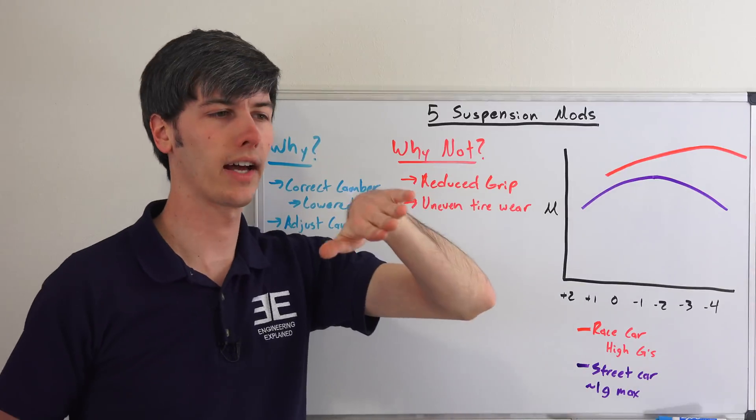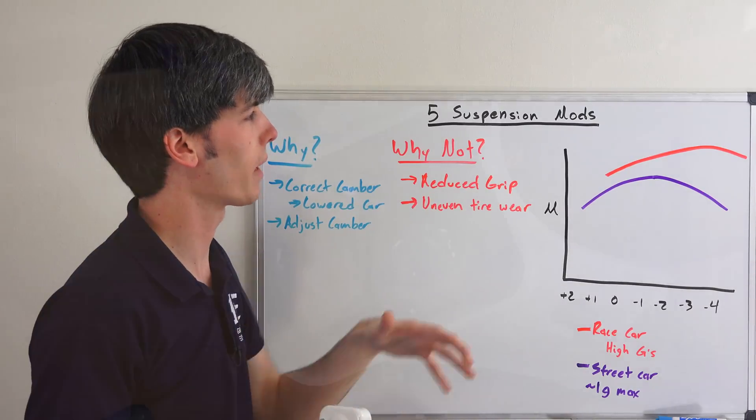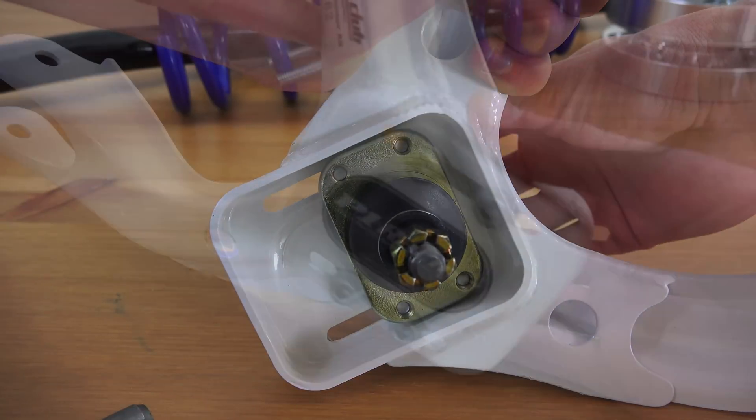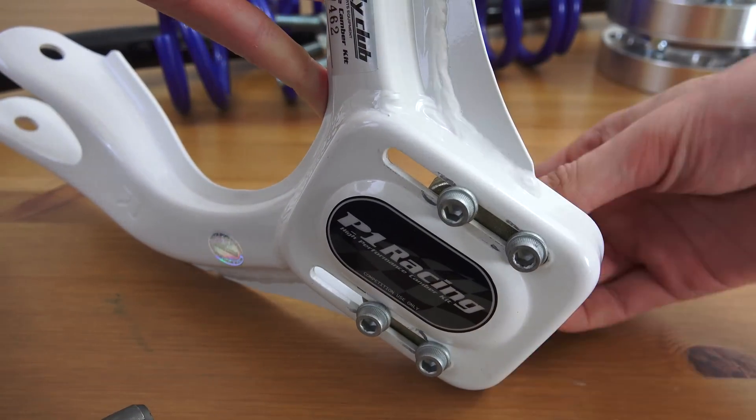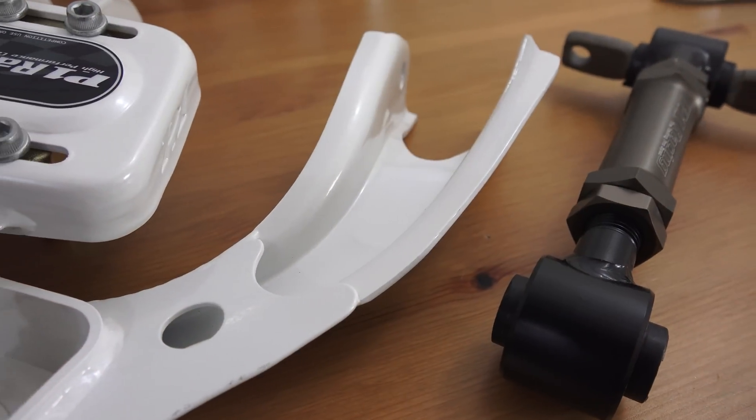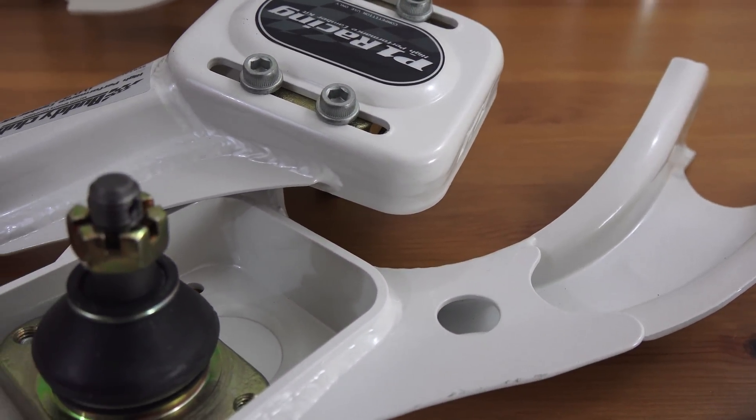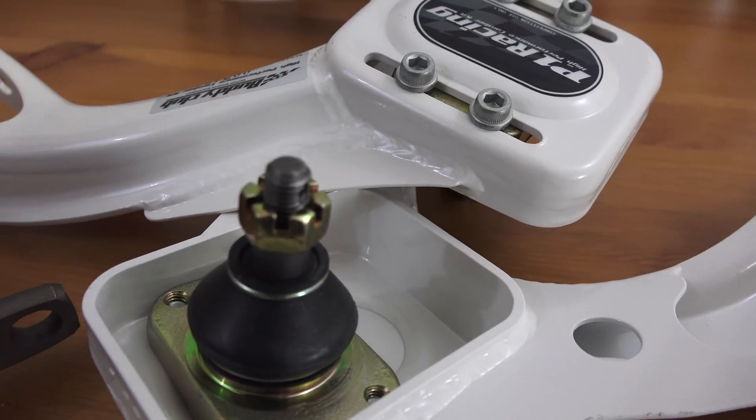You can really have the tire roll over onto itself and maximize the contact patch at a higher negative angle. But typically for a road car, you're not really going to want to have anything more than negative 1, negative 2 degrees of camber, probably around negative 1 maximum if it's something that you daily drive. Even then, it's totally fine to just keep it at zero.